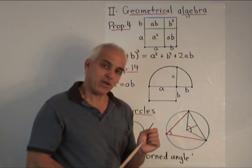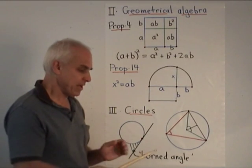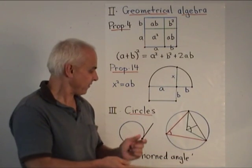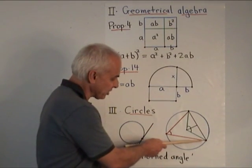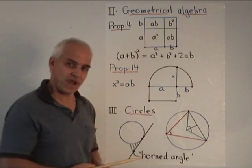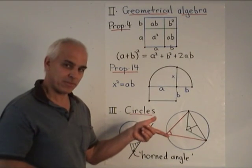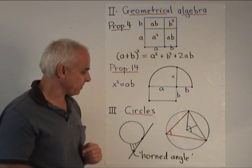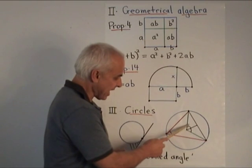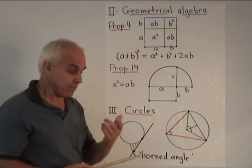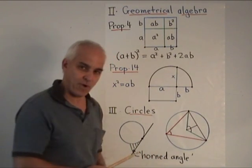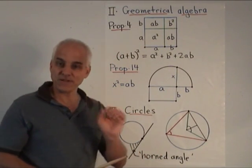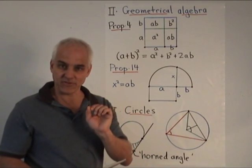By angle, the ancient Greeks did not mean what we mean in terms of 37 degrees or 54 degrees. They meant rather just the configuration consisting of the two lines or two rays. So that was an angle. It was a geometrical configuration. So when Euclid says that this angle is twice this angle, what he means is that you can split this angle up into two pieces, both of which are congruent to this one. There's no actual physical measurement system taking place here.